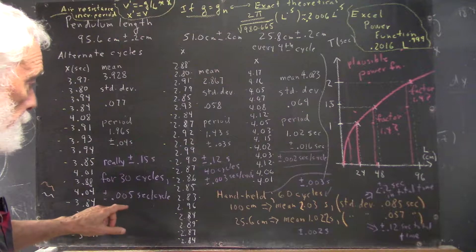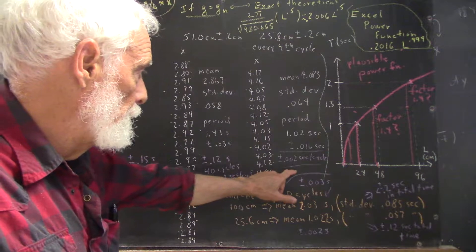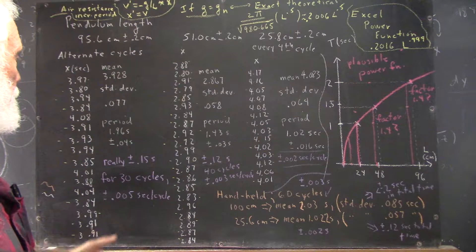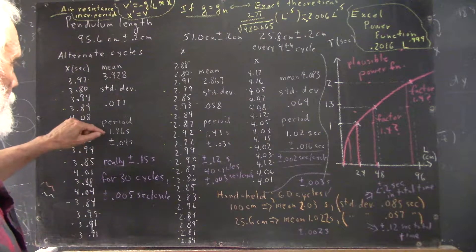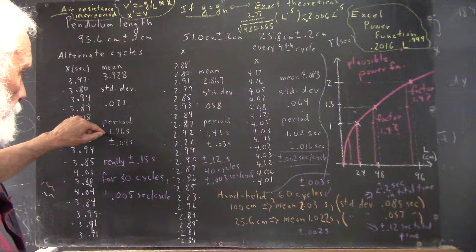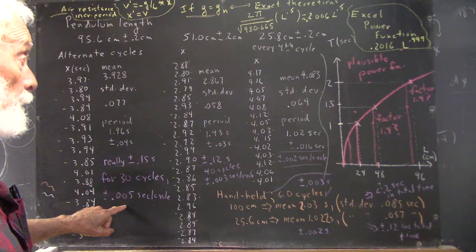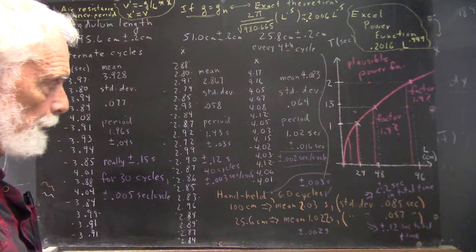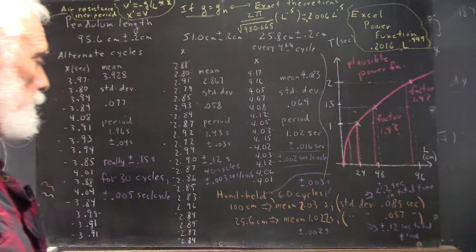But the bottom line is, these purple uncertainties are really kind of the uncertainties that we think we have in our mean results. So, this looks like it's about 1.96 seconds plus or minus 0.005 seconds. This looks like it's 1.43 plus or minus 0.03 seconds, and so forth.